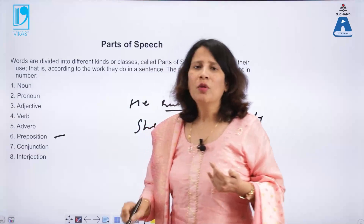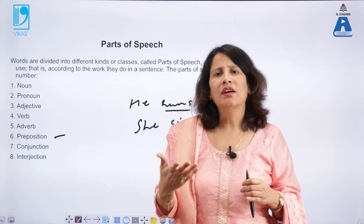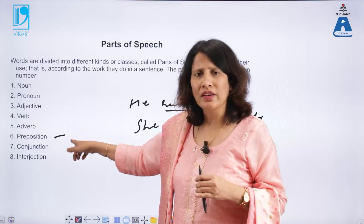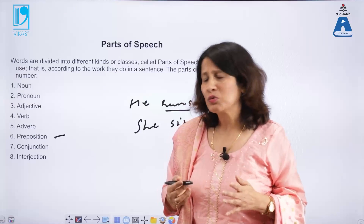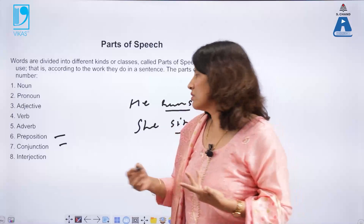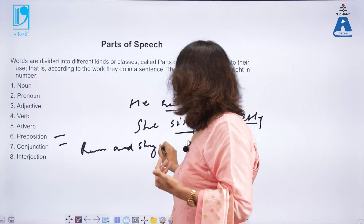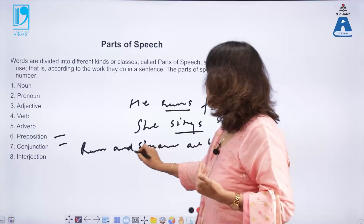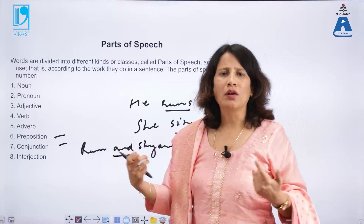A preposition, as the name suggests, is positioned before a noun and governs the noun that follows it. We will tackle prepositions in detail in our next video with plenty of examples. A conjunction is a connector — it connects two parts. For example, in 'Ram and Shyam are best friends,' 'and' is a conjunction connecting two nouns.